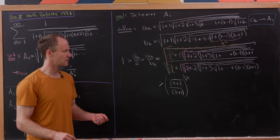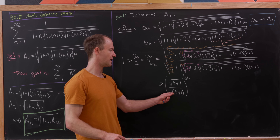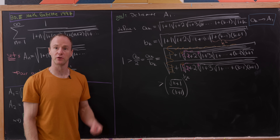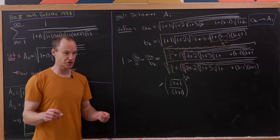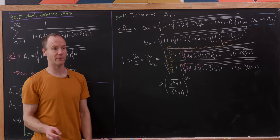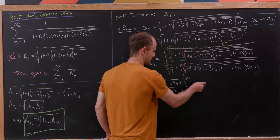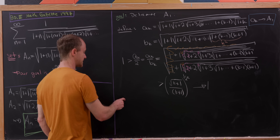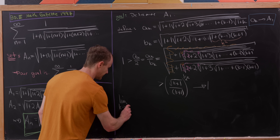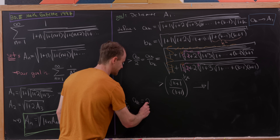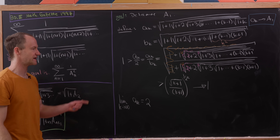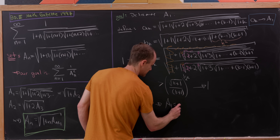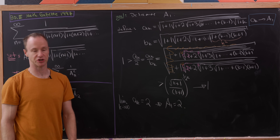The argument of the exponentiation is approaching 1, and the exponent 1 over 2 to the k is approaching 0 as k approaches infinity, pushing the whole limit to 1. So the limit of a sub k over 2 equals 1. By the squeeze theorem, the limit as k goes to infinity of a sub k equals 2. Since a sub k converges to A sub 1, we conclude A sub 1 equals 2.